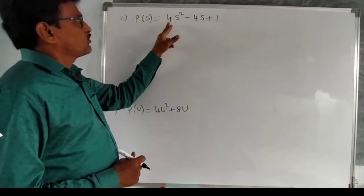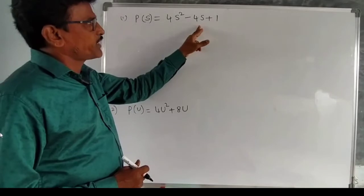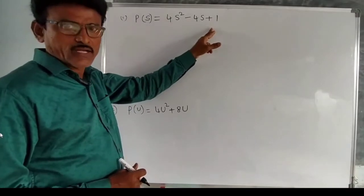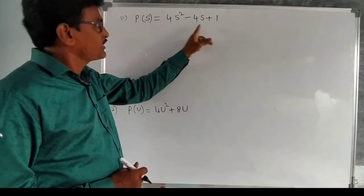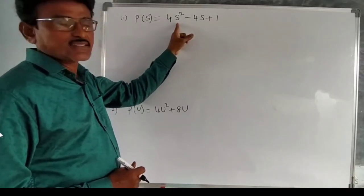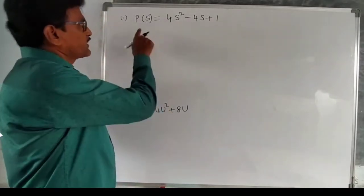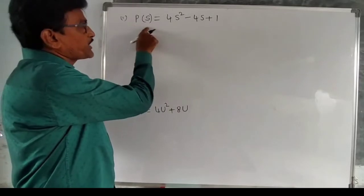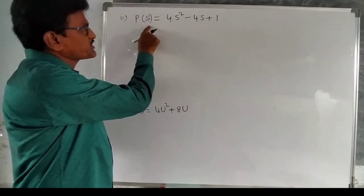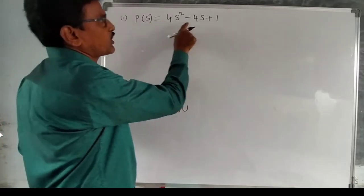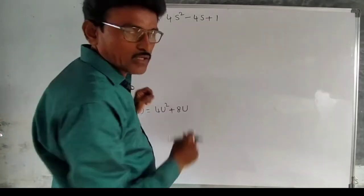Now two more similar examples. First: p(s) = 4s² minus 4s plus 1. This is a quadratic polynomial in variable s, that is why I have written p(s) and not p(x).